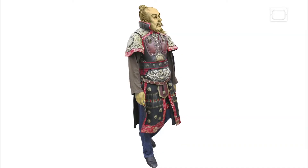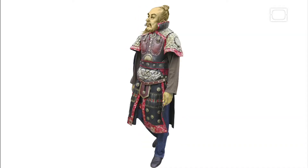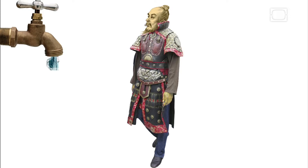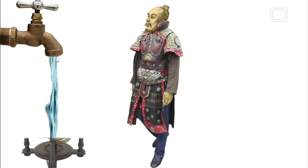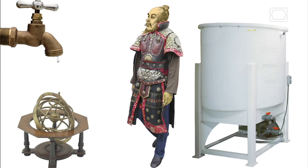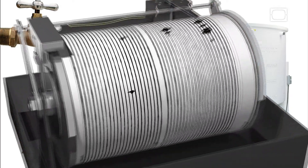During his time at the Imperial Court, Zhang perfected several inventions, such as a water-powered armillary sphere and a water clock. However, history has paid homage to one of his inventions above all others: the seismometer.